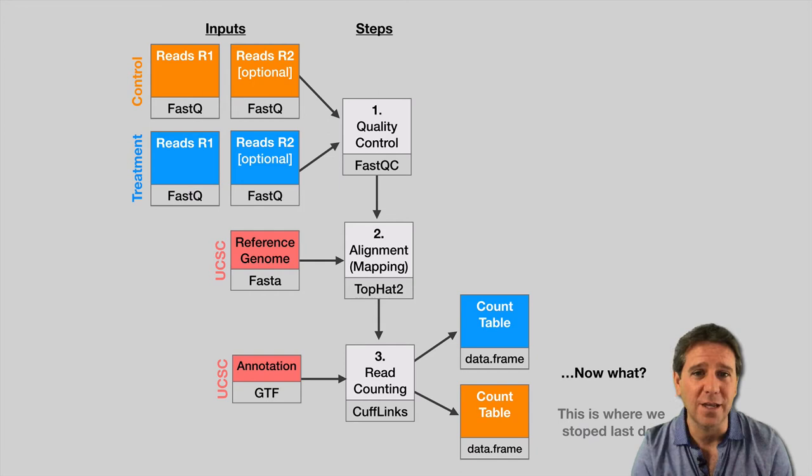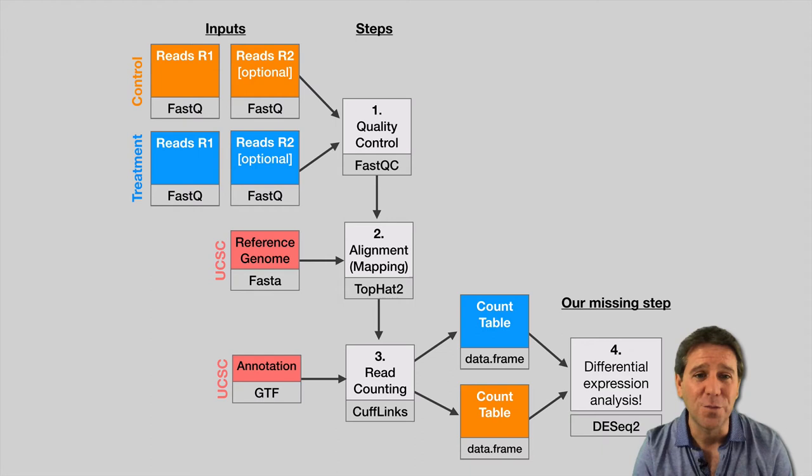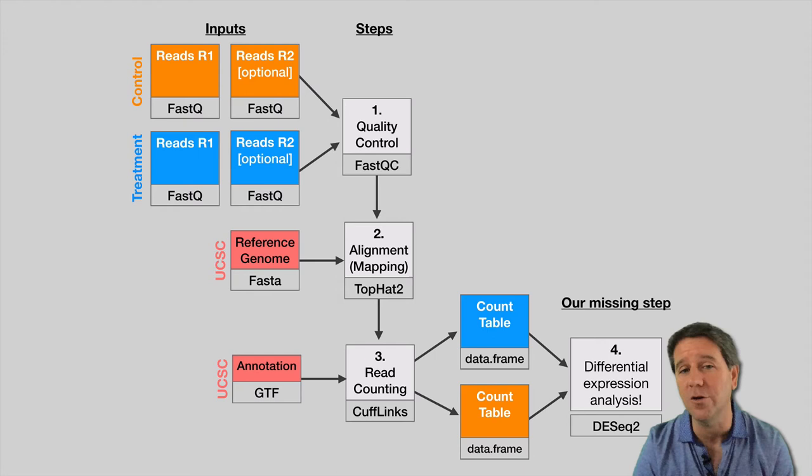This is where we left our hands-on session last time. We maybe did some principal component analysis or PCA to see if there were interesting consistent differences between treatment and control, or obvious outliers that we'd want to investigate further or perhaps exclude. What we're missing from the work we did last time was a robust differential expression analysis. This is typically done in R with packages such as DESeq or edgeR or limma, and we're going to focus on this step now.